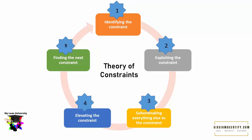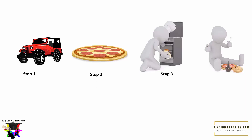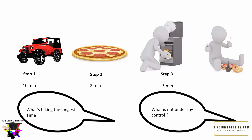Let us use the pizza production process as an example. The first step is going to the shop and buying ingredients, step two is assembling all the parts of the pizza, and step three is baking it. Suppose step one takes 10 minutes, step two takes 2 minutes, and step three takes 5 minutes. If our objective is decreasing time, then the bottleneck is clearly step one — going to the market to buy ingredients.